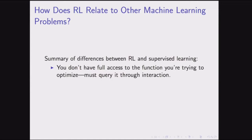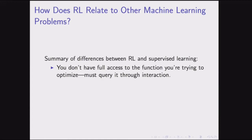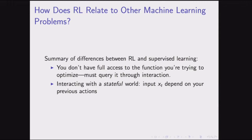To summarize the differences: first, you don't have full analytic access to the function you're trying to optimize — you have to query it through interaction. Second, you're interacting with a stateful world, so the input you get depends on your previous actions. Taking just the first difference gives you the contextual bandit setting — sort of halfway between supervised learning and full RL.